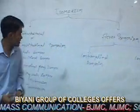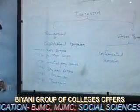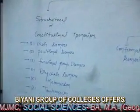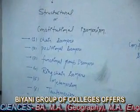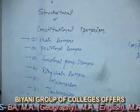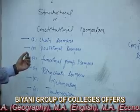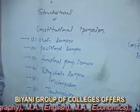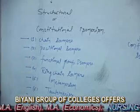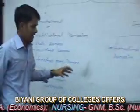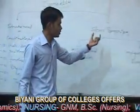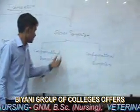The six categories are: first, chain isomers; second, positional isomers; third, functional group isomers; fourth, ring-chain isomers; fifth, metamerism; and sixth, tautomerism. But our topic is stereoisomerism.